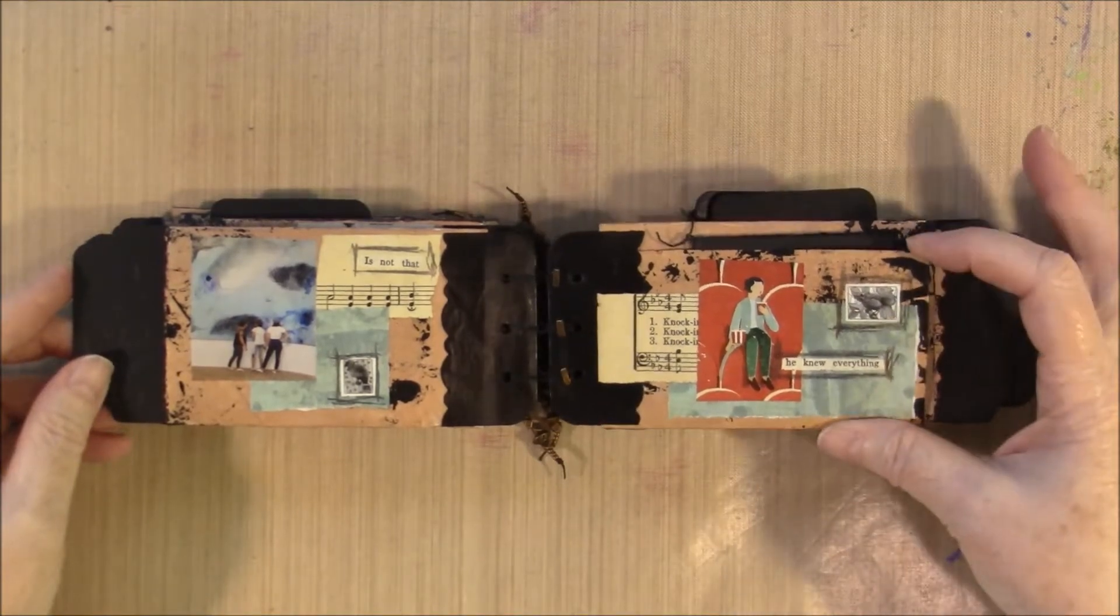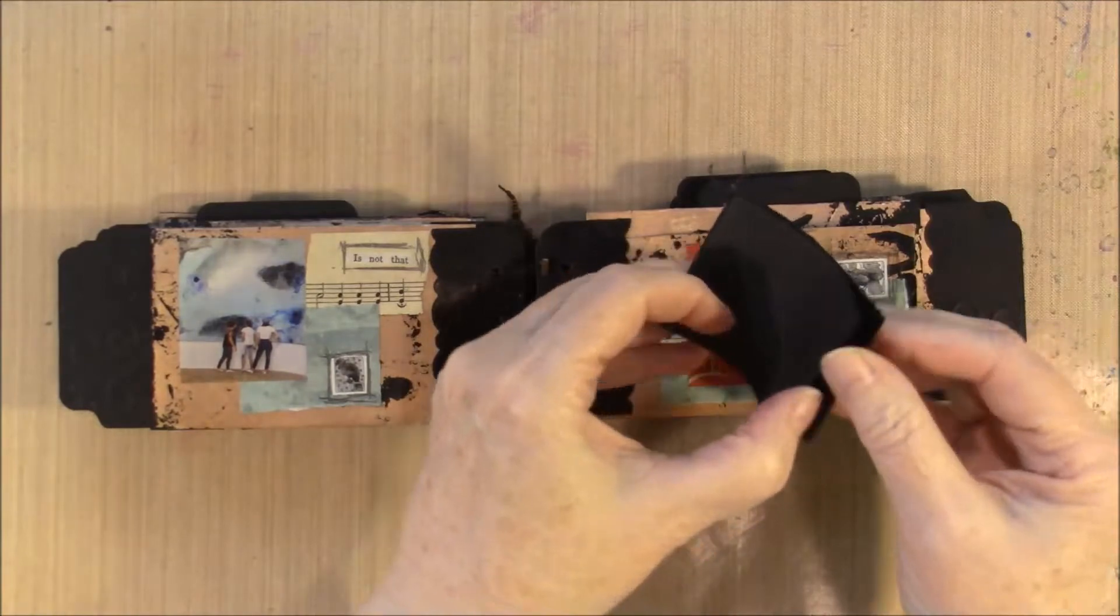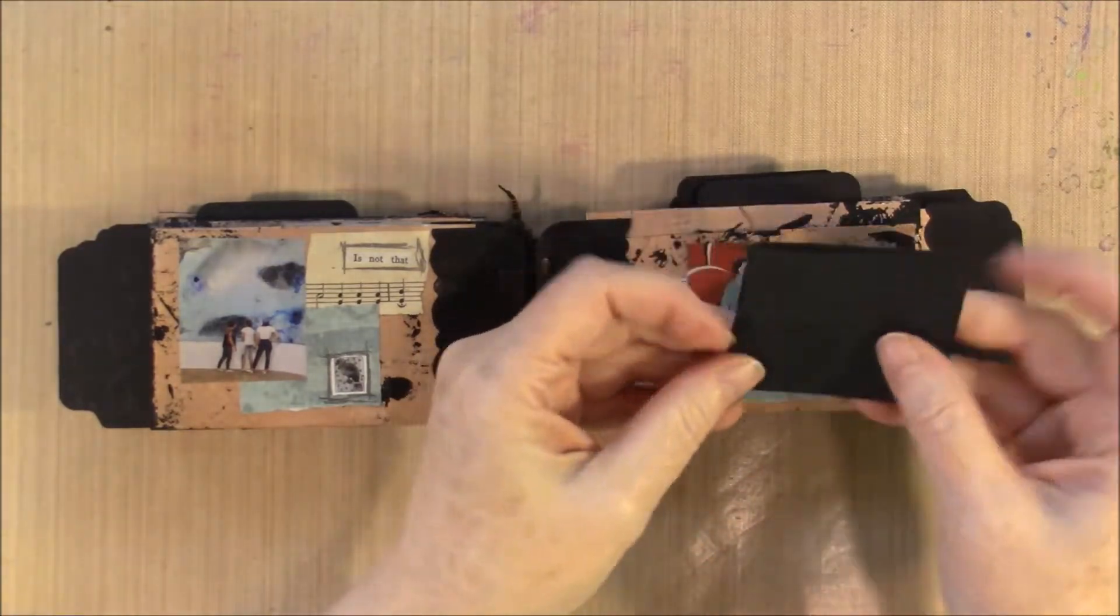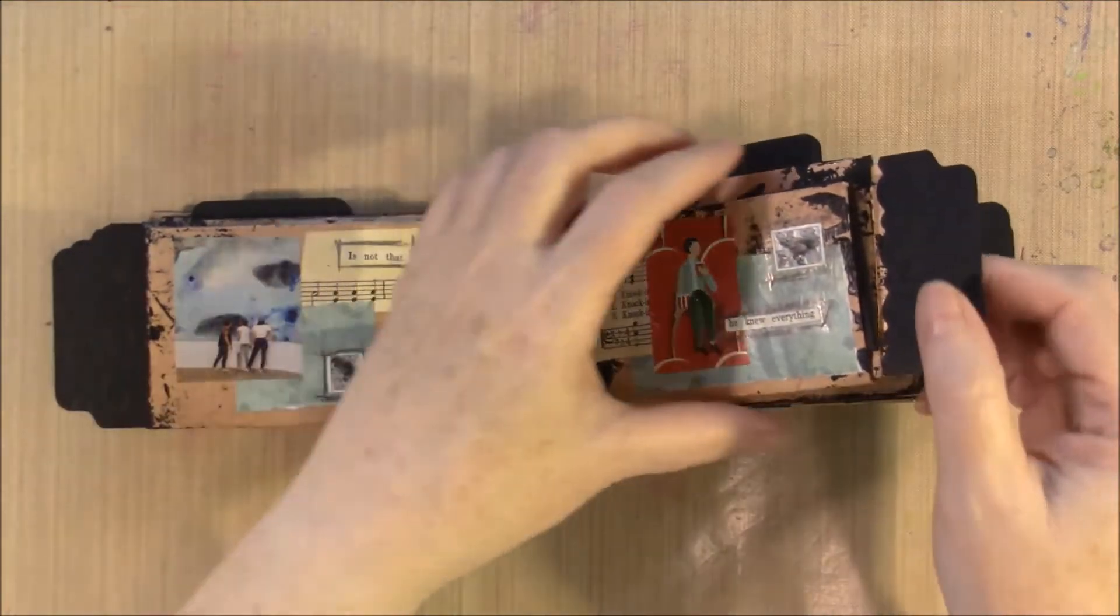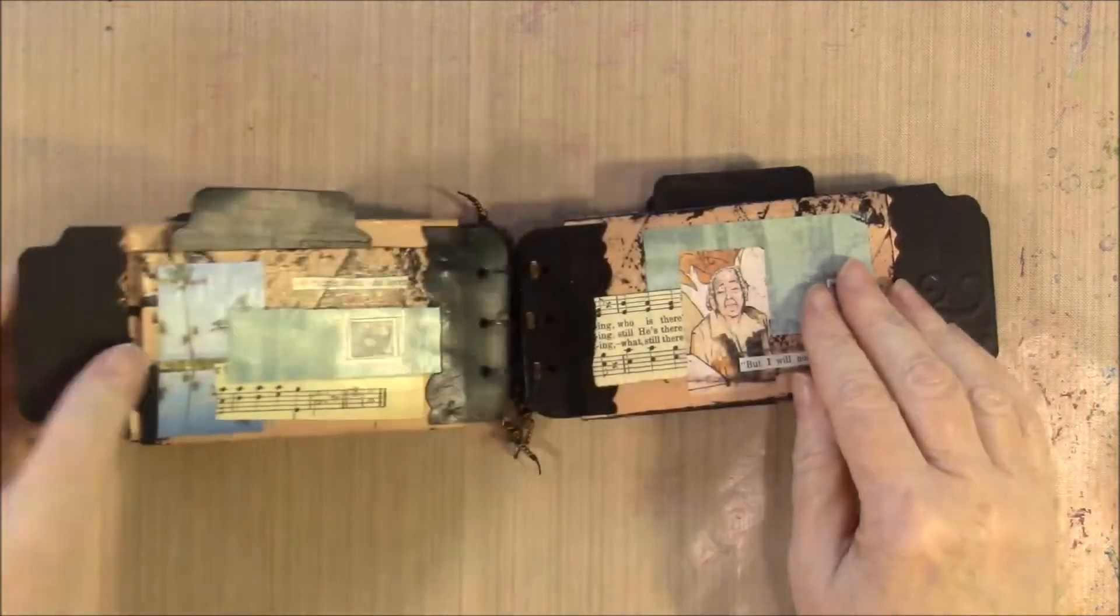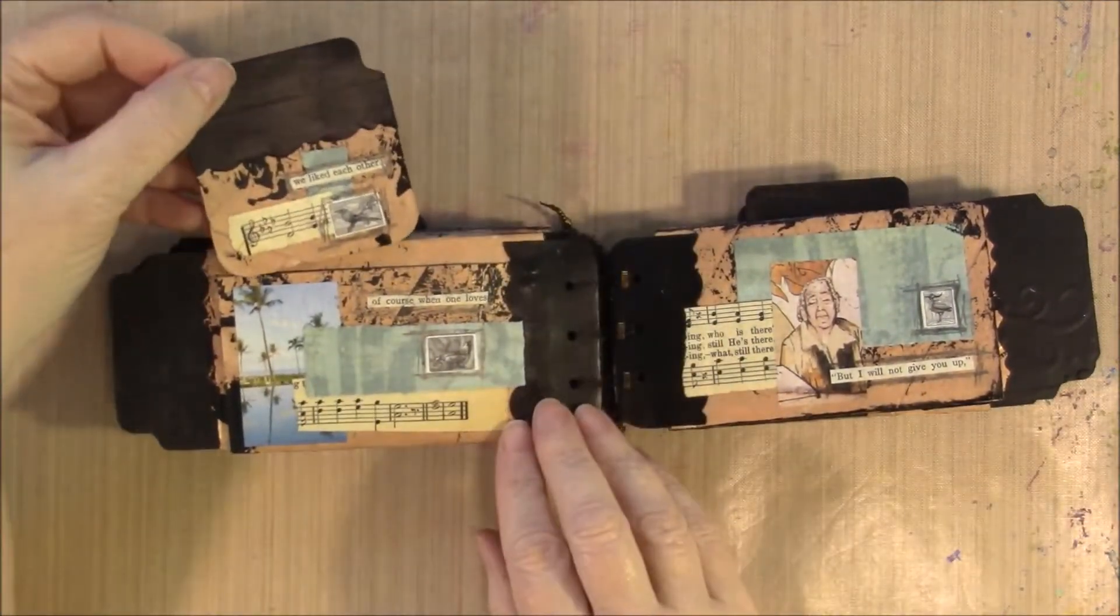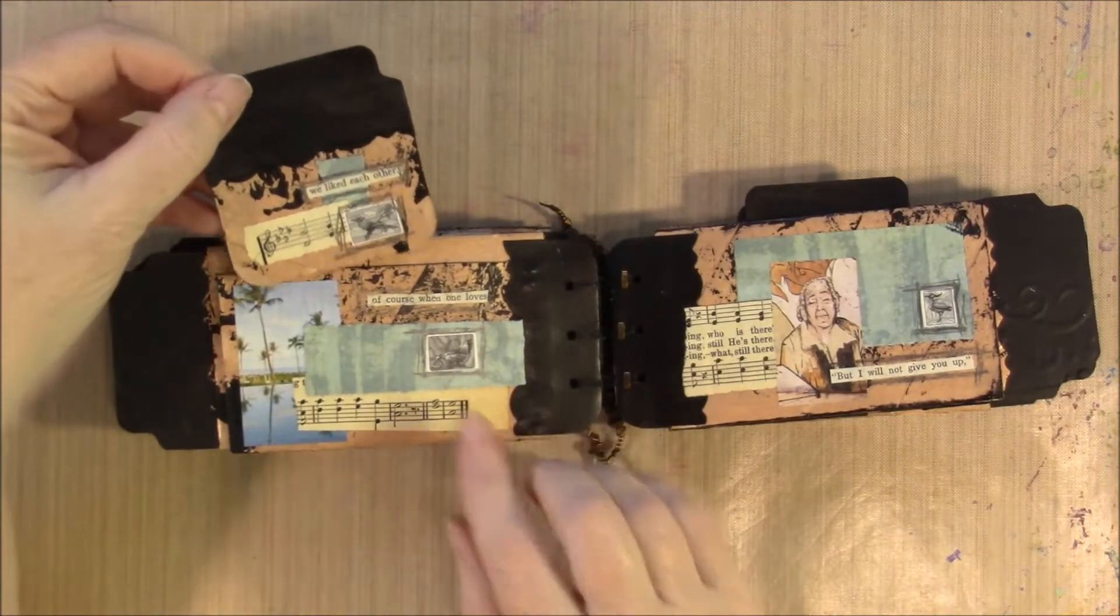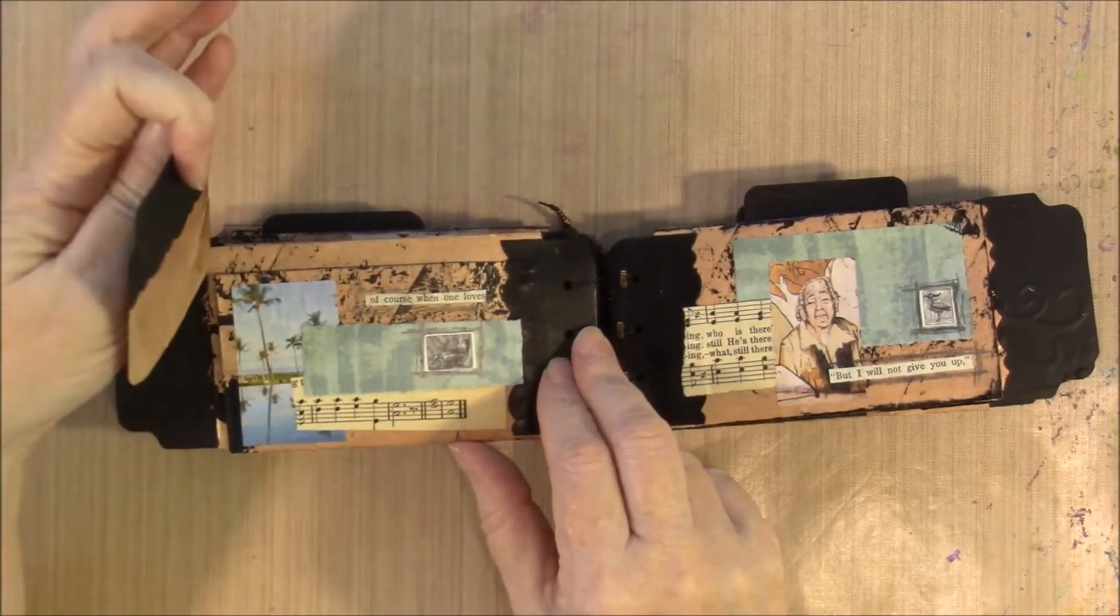Again, this is another little side pocket and this one there's just a little book with black pages. And another slide-in tag, and on this side there's another little tag that comes out. On these two little tags I did do some collage. I didn't do it on the back, just on the front.